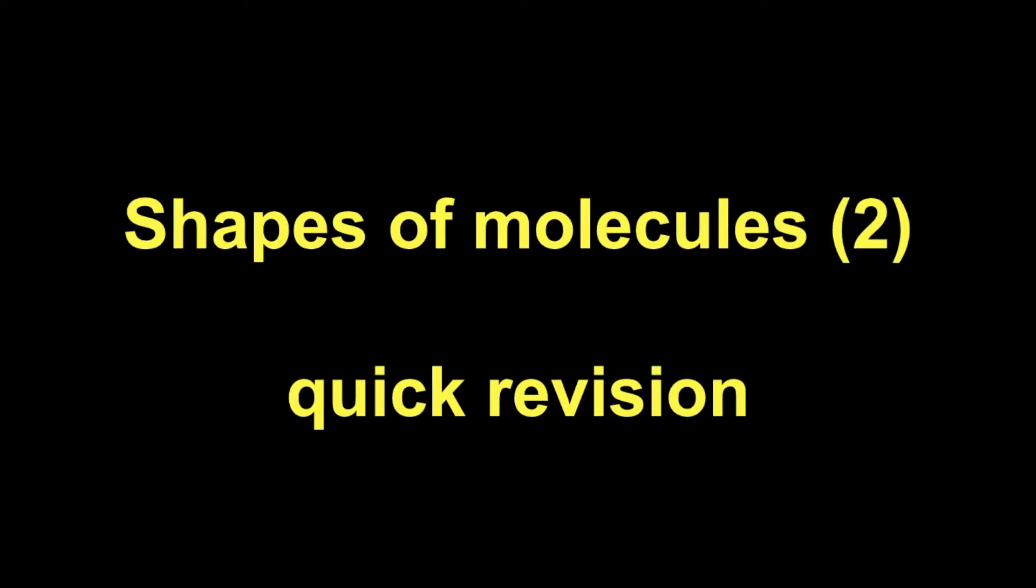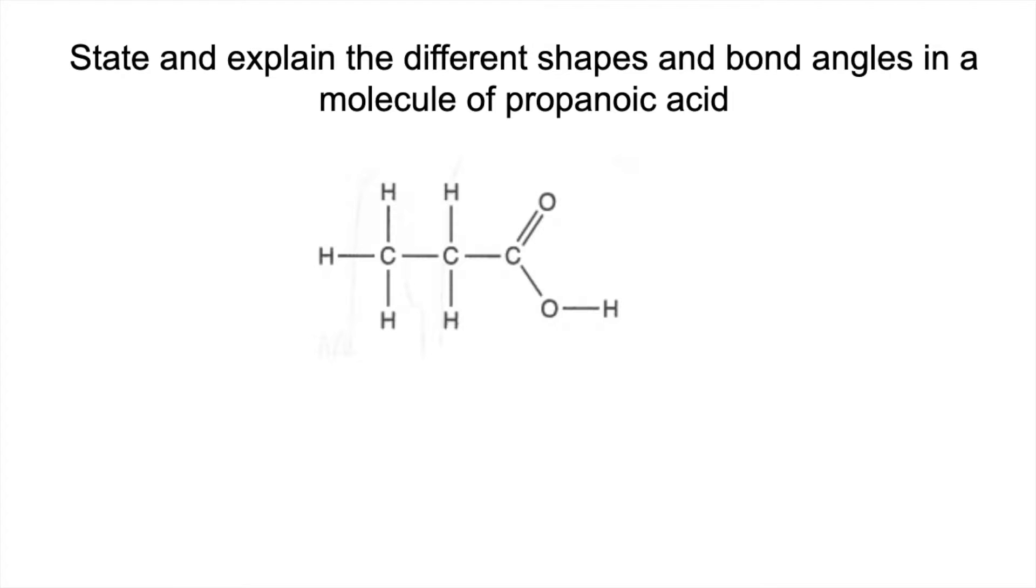This is the second quick revision video on shapes of molecules. I've based the video around an exam question where you're given the displayed formula for an organic molecule, so it's propanoic acid in this case, and you've just got to pick out all the different shapes and bond angles in the molecule and obviously explain it fully.